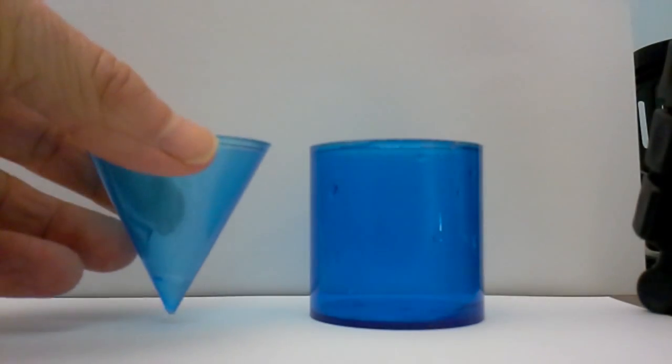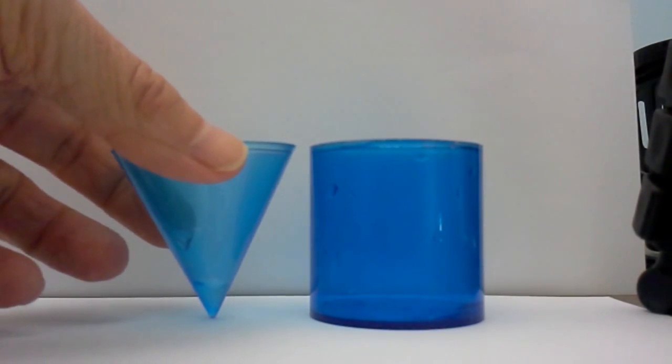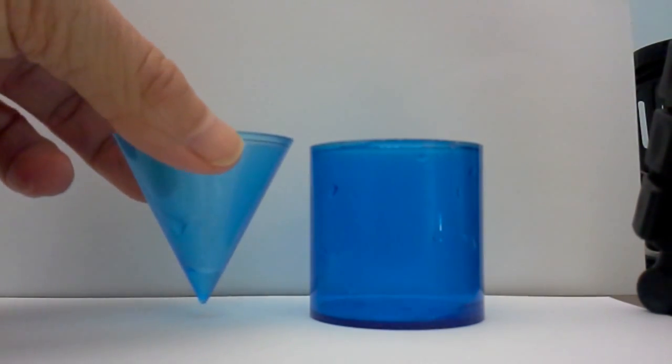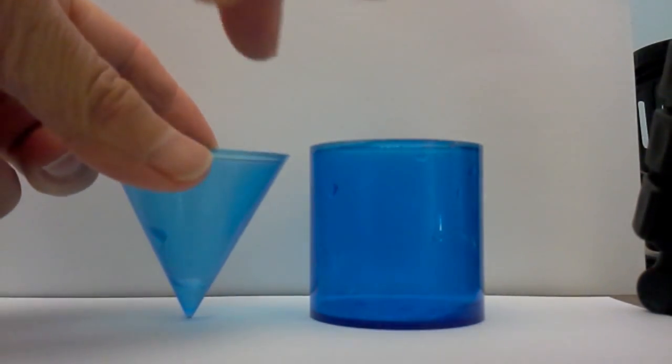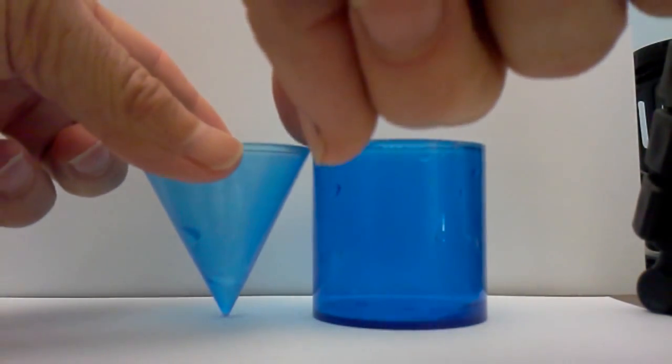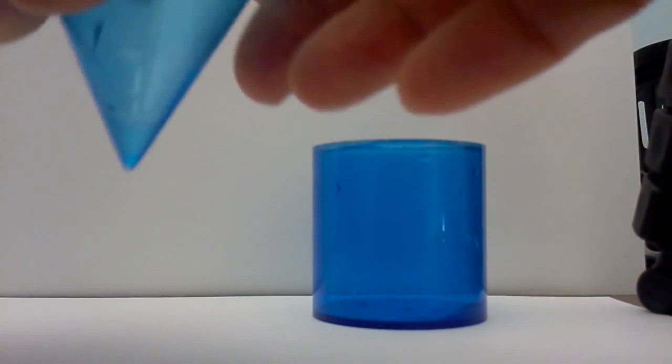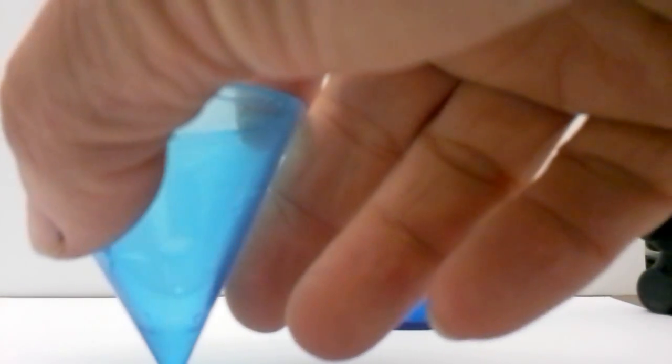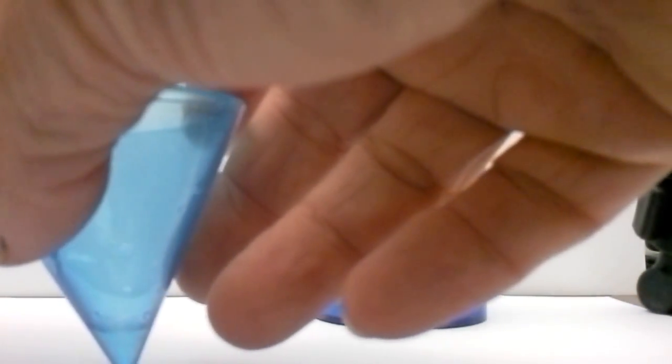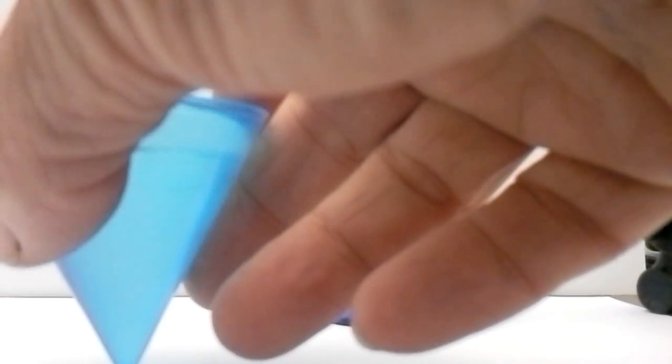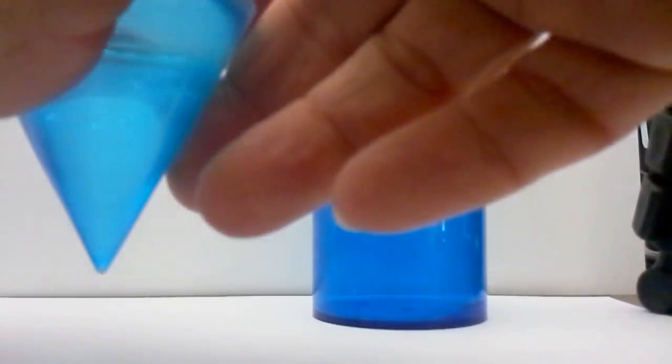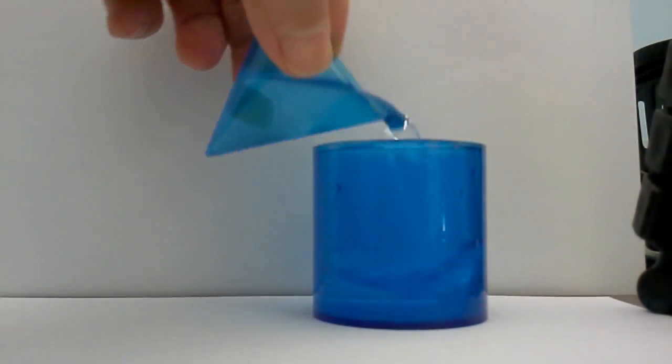So now that we have worked out the formula and we see mathematically that it takes three cones to fill up one cylinder that have an equal base and an equal height, let's go ahead and fill them up with water and see if this actually works out. So here is number one.